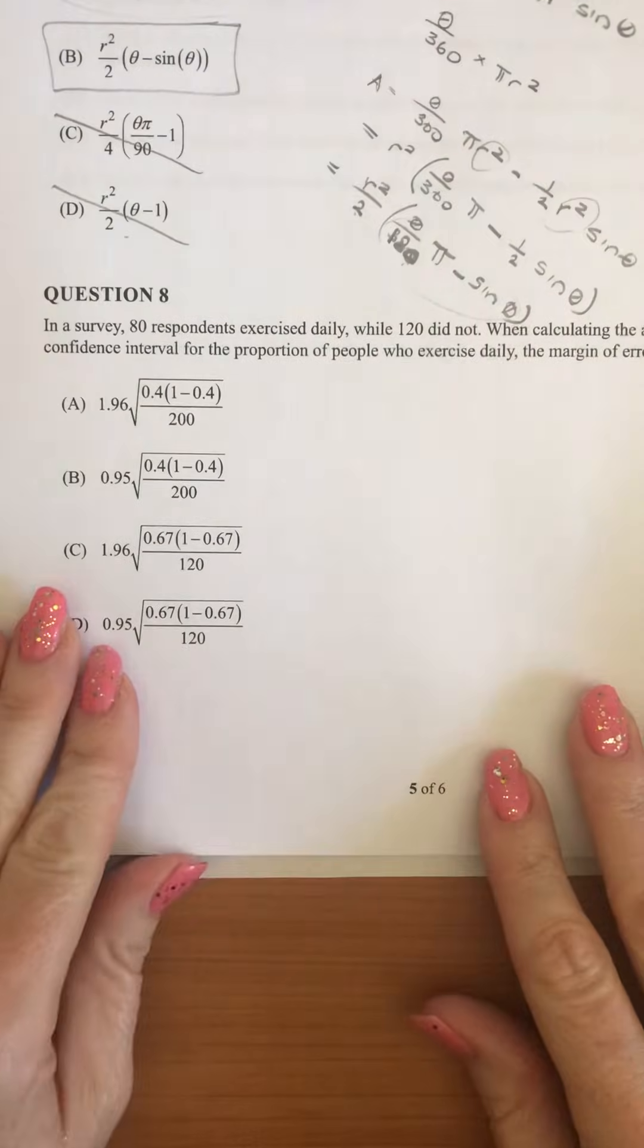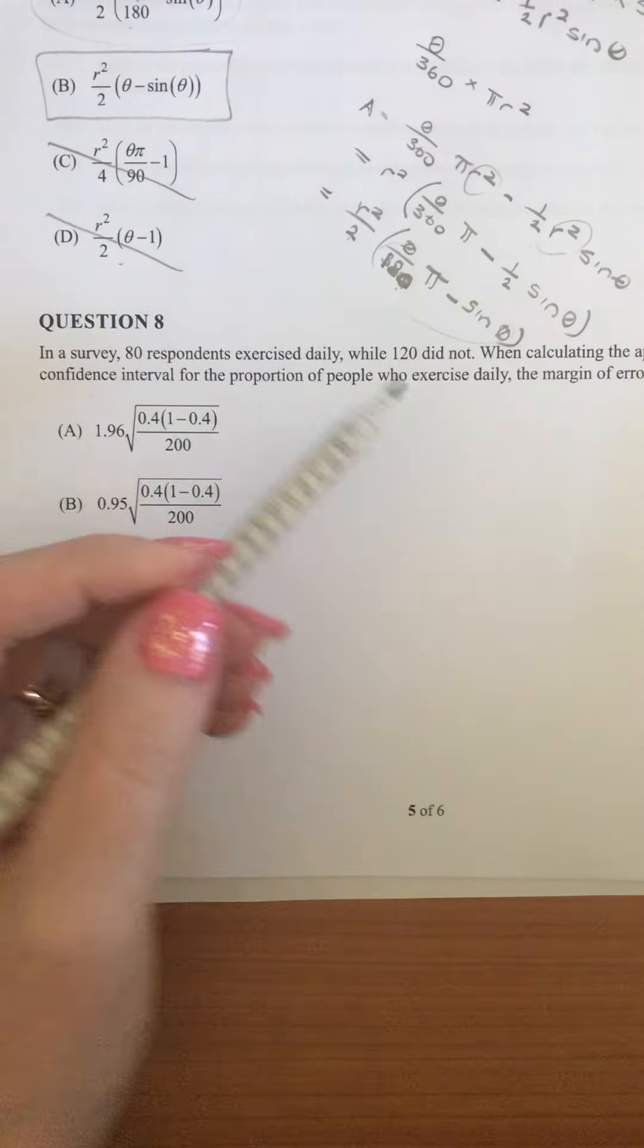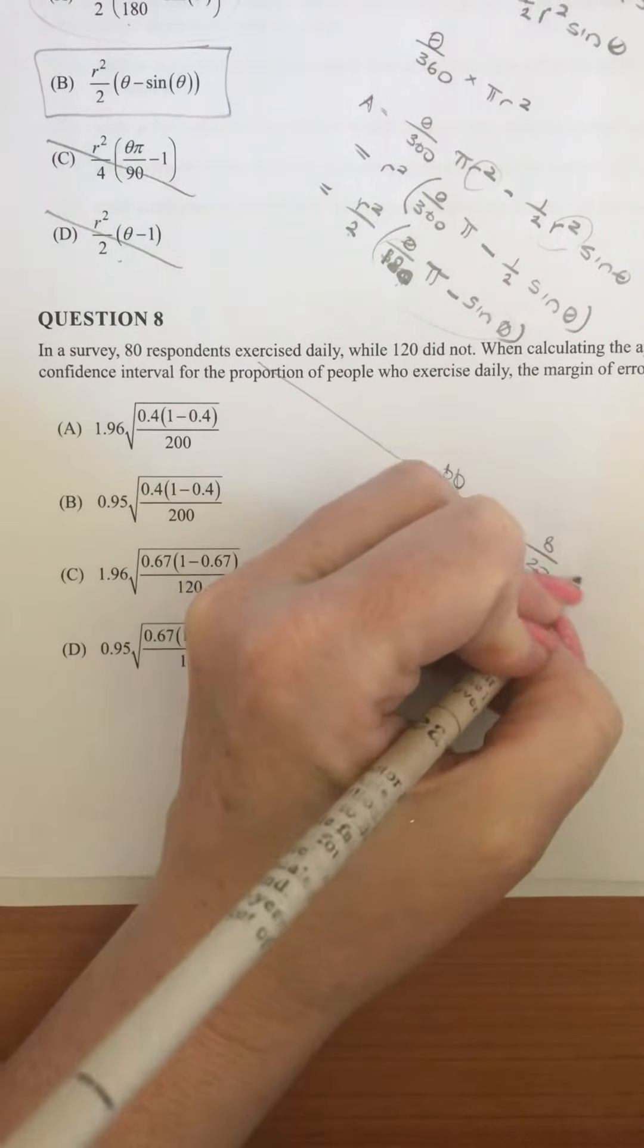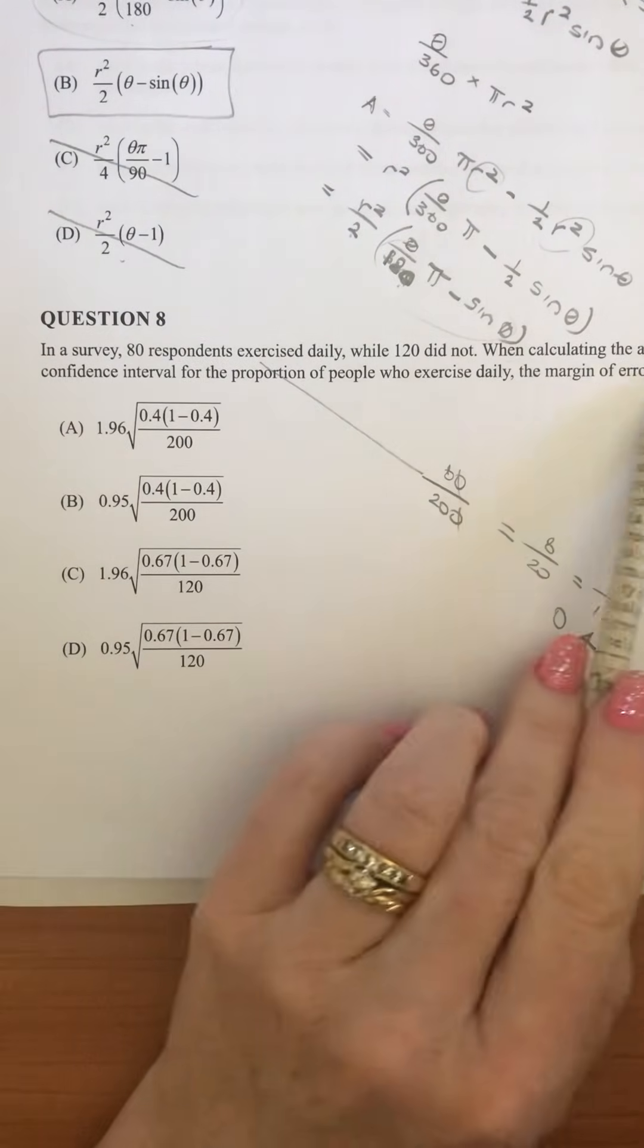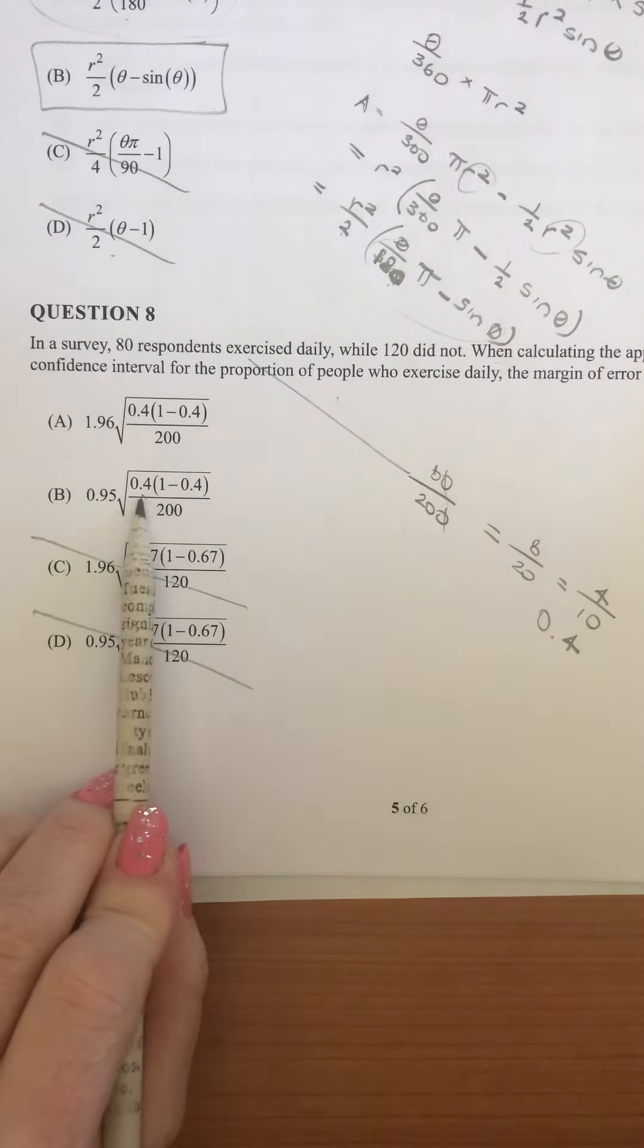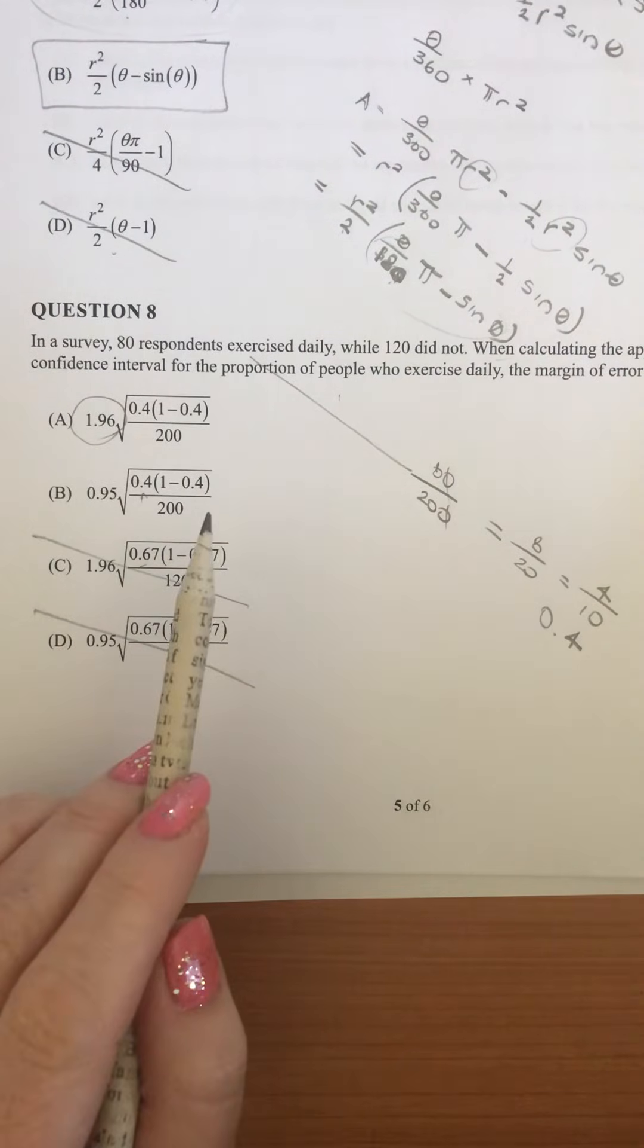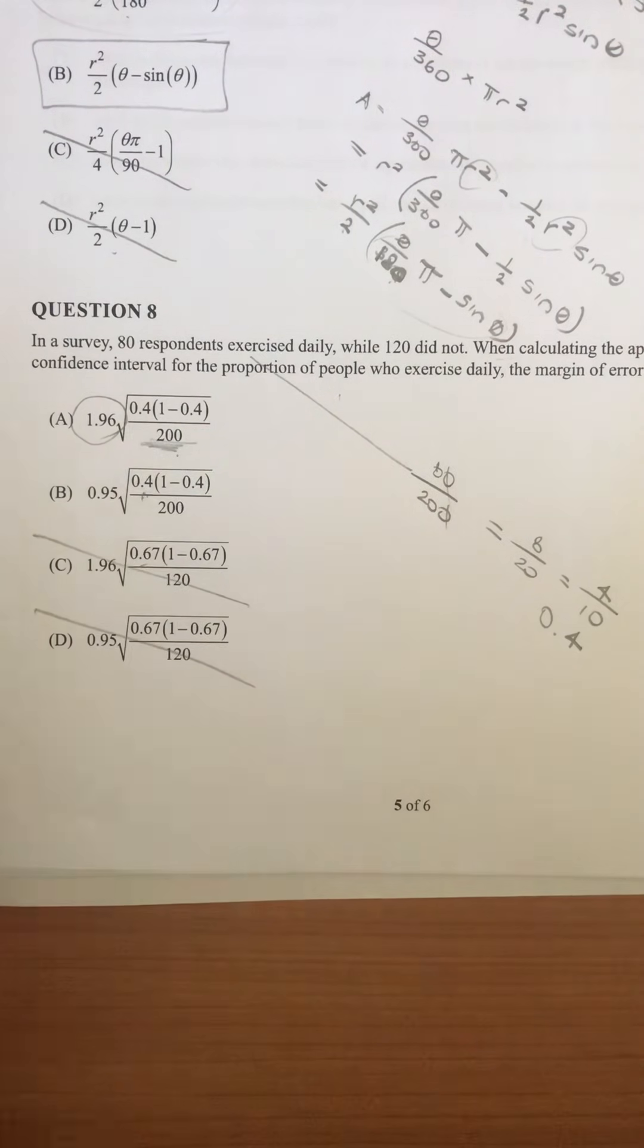Now question 8. We've got in a survey, 80 respondents exercised daily while 120 did not. So we need to work out the probability based on that. So that's 80 out of 200. And so that would give us 8 over 20, which will be 4 over 10 or 0.4. So then, we're calculating the approximate 95% confidence interval. So that already takes out those last two because they've got the 0.67 rather than 0.4. Then we know that when we do the 95%, we're using the 1.96. So we know that's probably going to be A. And then we are looking to check that the N is the right number there, which is our 200. And so A is our answer.